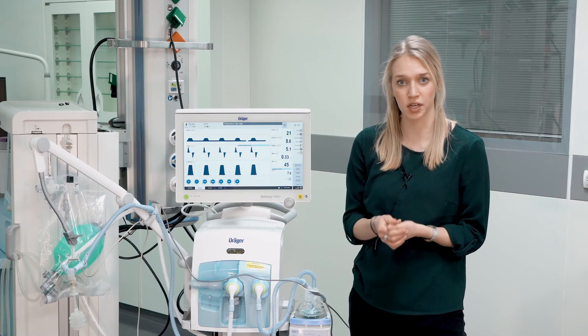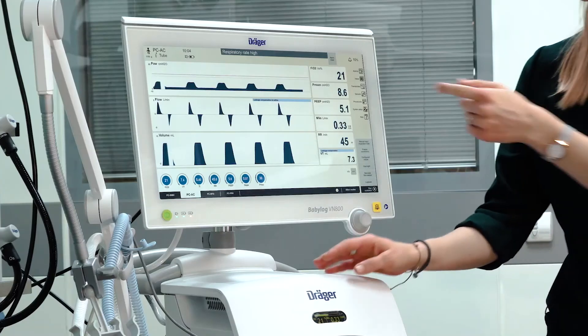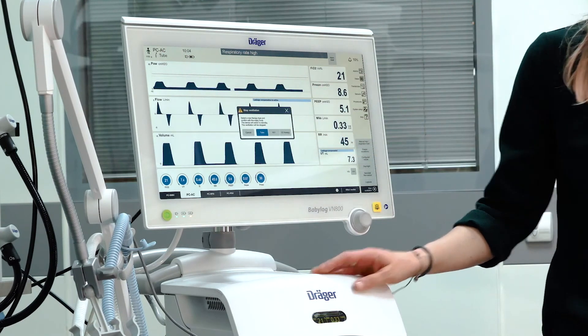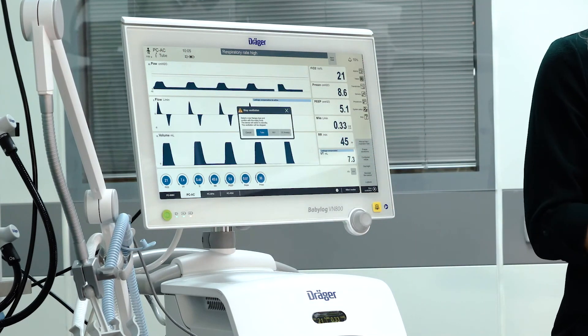If you want to change to a different therapy type like non-invasive ventilation or O2 therapy, simply press on the symbol tube. You will be informed that the ventilator will switch to standby. You can then change the equipment.